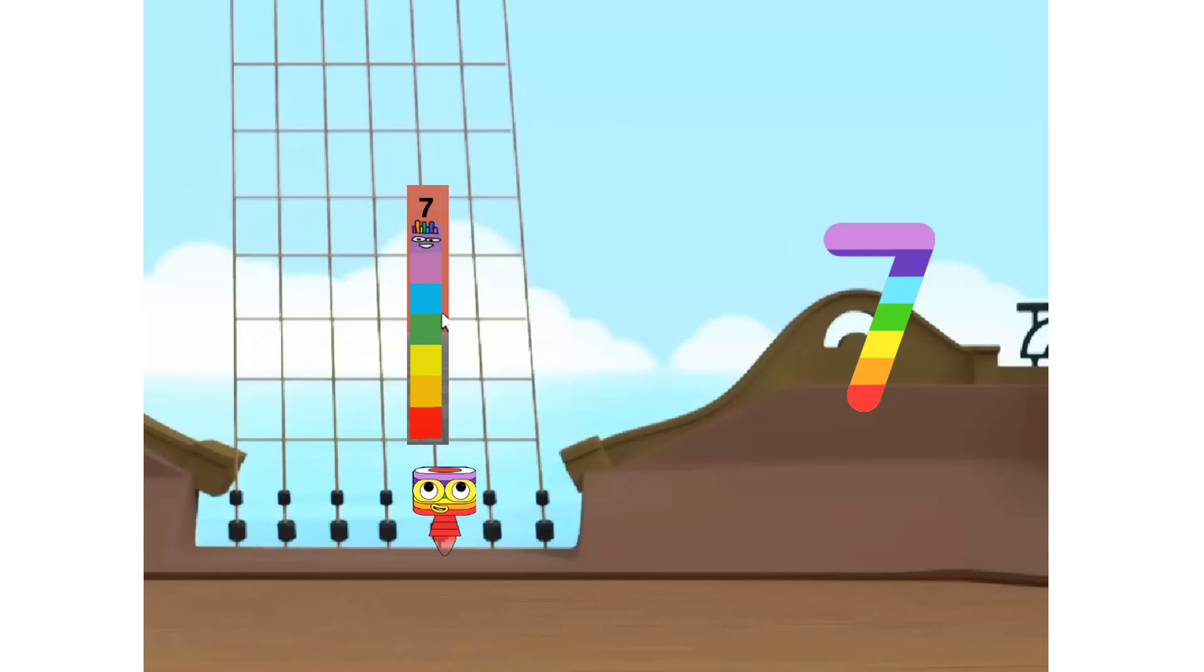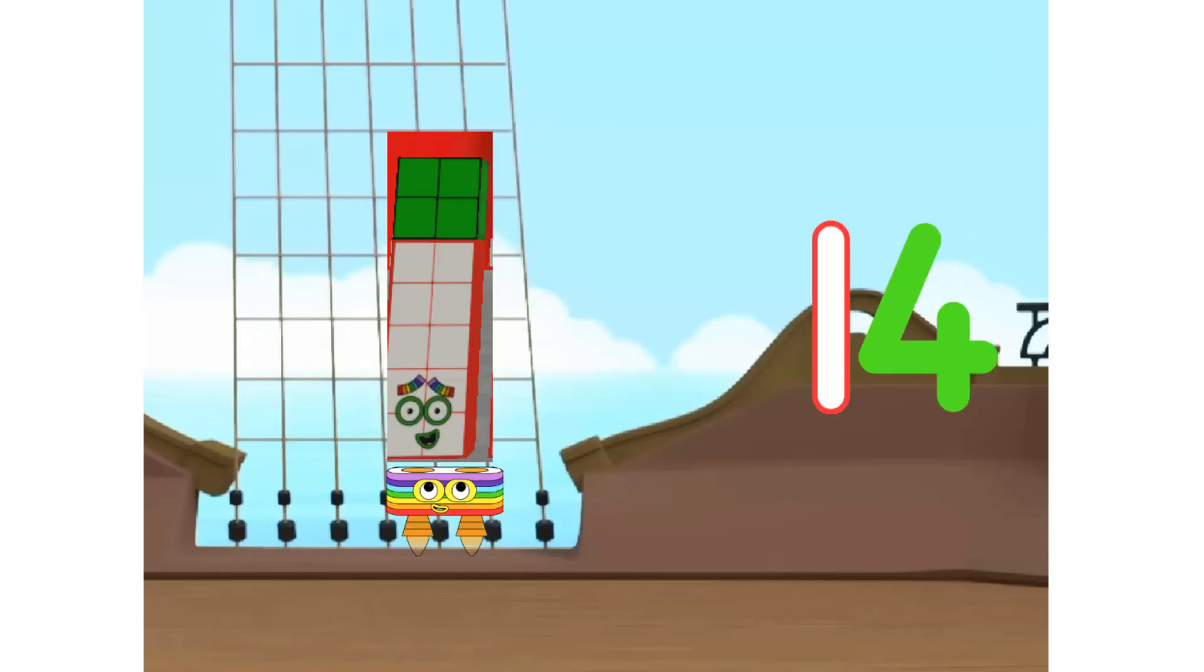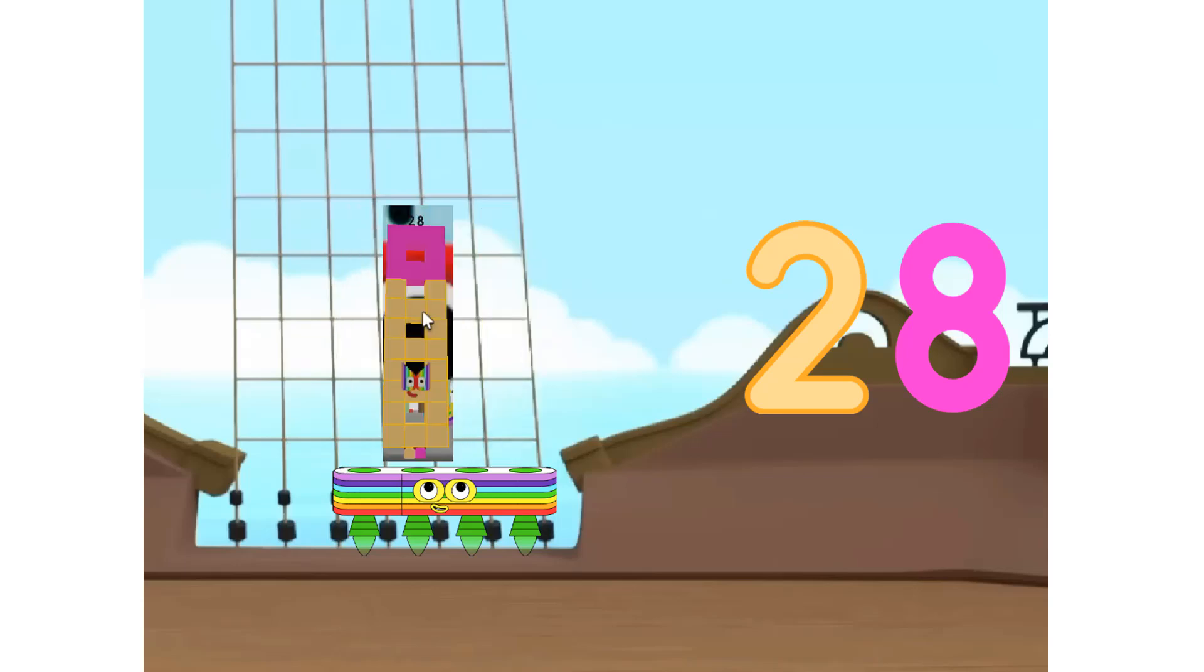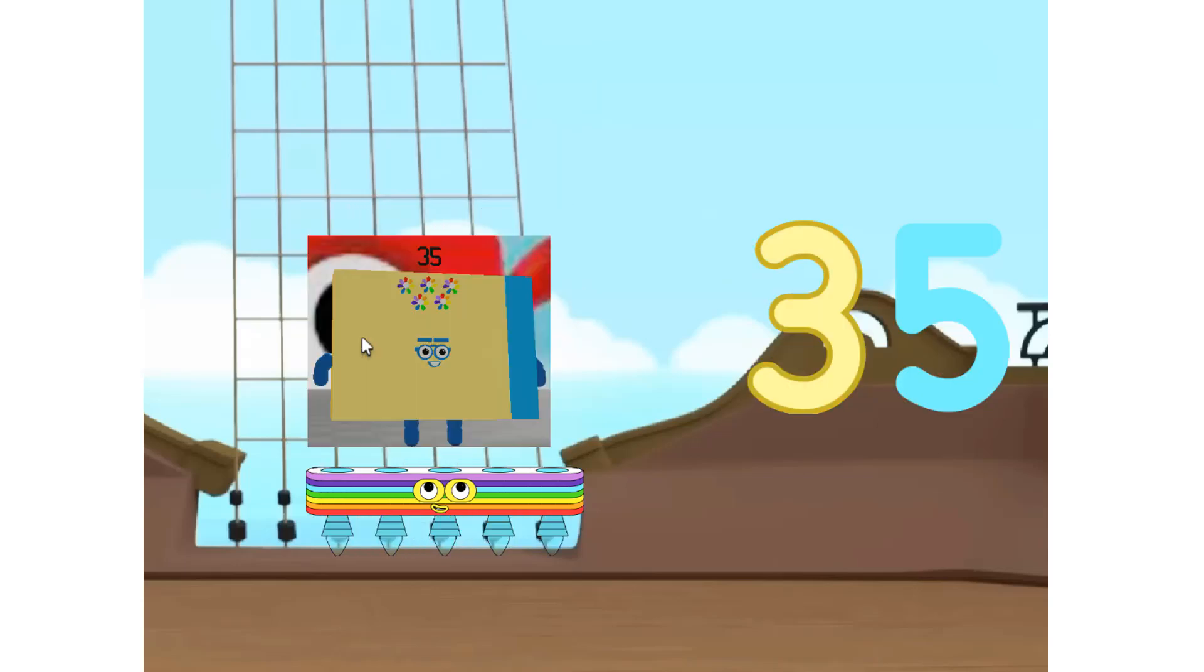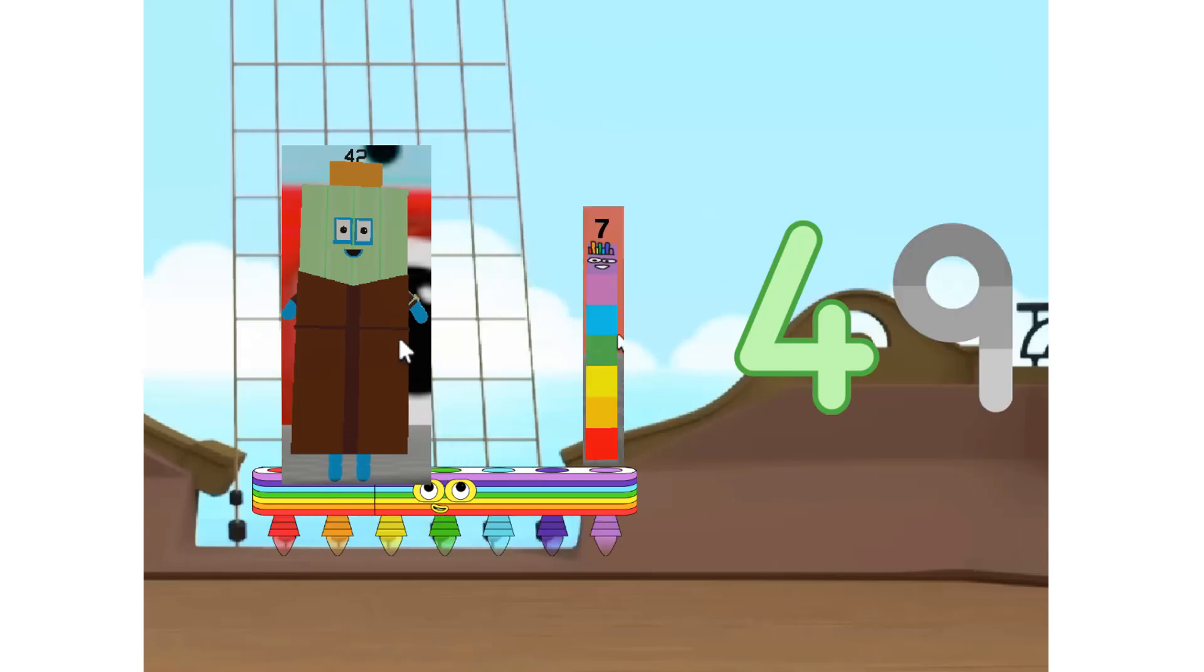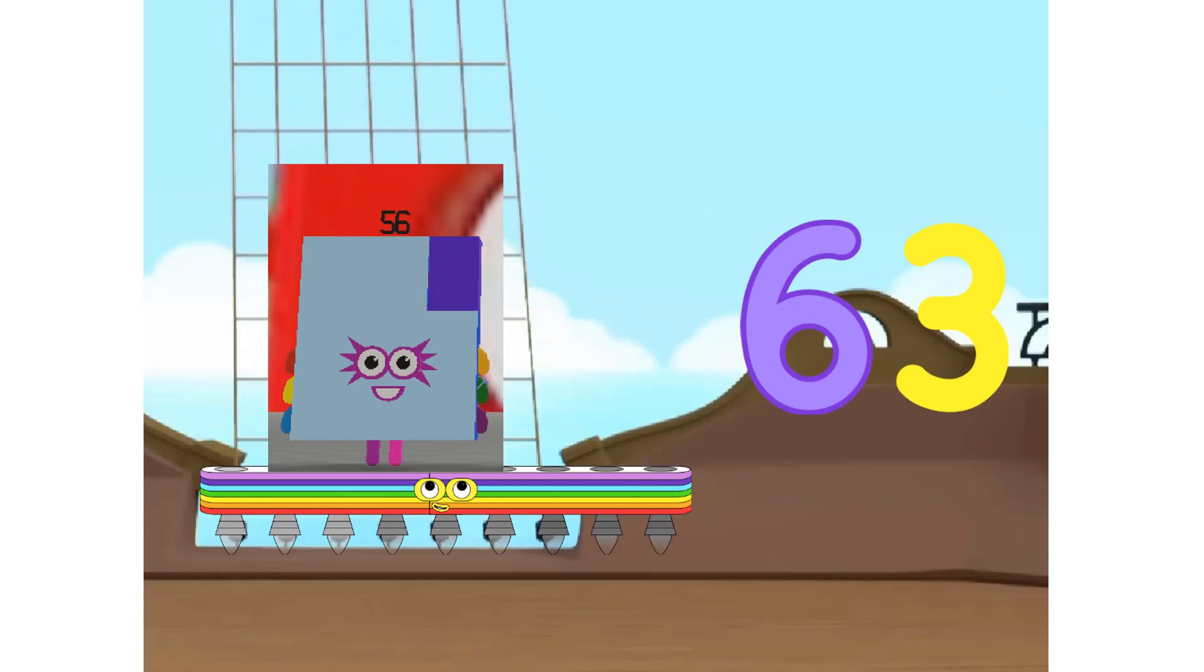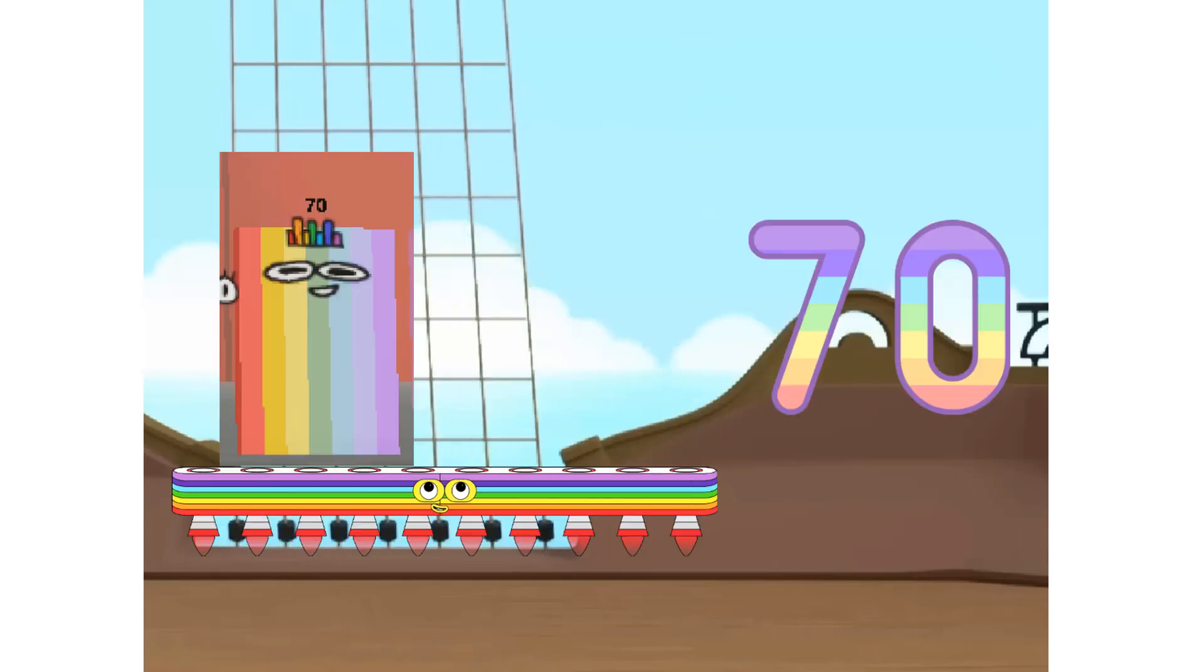1 7 is 7, 2 7s are 14, 3 7s are 21, 4 7s are 28, 5 7s are 35, 6 7s are 42, 7 7s are 49, 8 7s are 56, 9 7s are 63, 10 7s are 70.